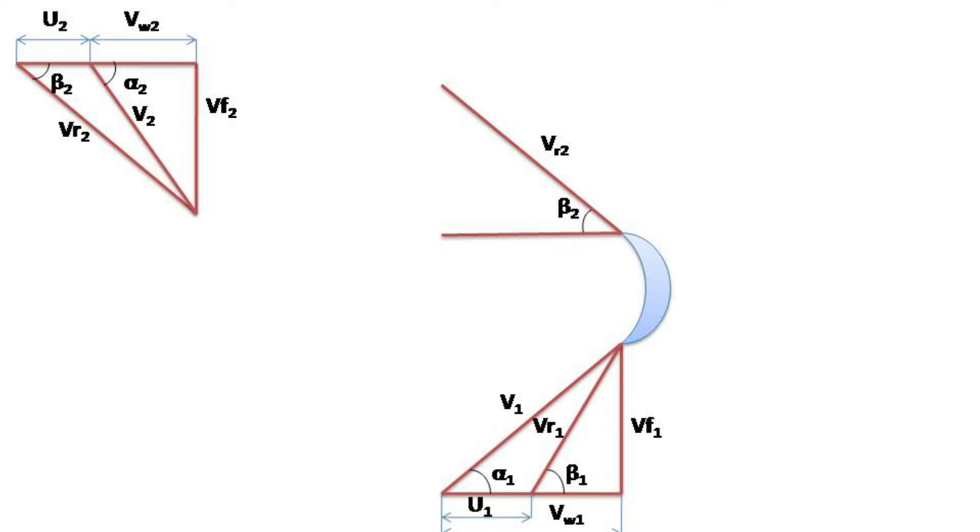After drawing vr2 at β2 angle, we can show the existing velocity v2 at α2 angle and it is less than vr2 and it can be drawn from the apex of the triangle like this.